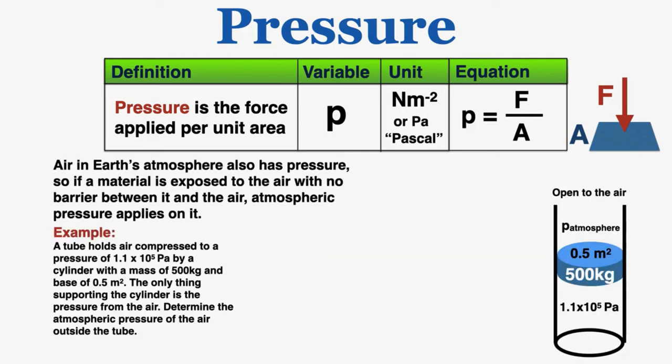Air in Earth's atmosphere also has pressure, so if a material is exposed to the air with no barrier between it and the air, atmospheric pressure applies on it. As an example, a tube holds air compressed to a pressure of 1.1 times 10 to the fifth Pascal by a cylinder with a mass of 500 kilograms and a base of 0.5 meters squared. The only thing supporting the cylinder is the pressure from the air, and we want to determine the atmospheric pressure of the air outside the tube.